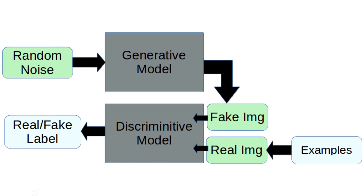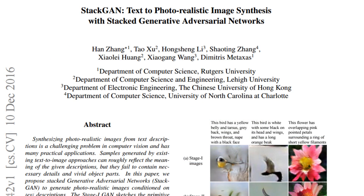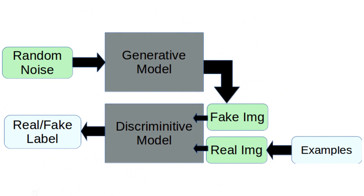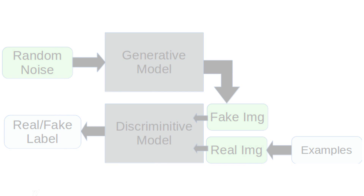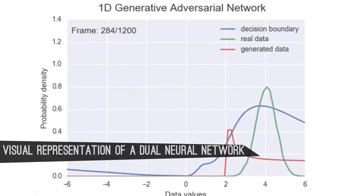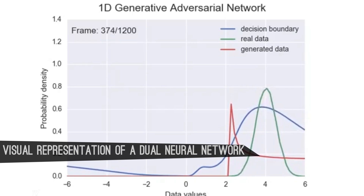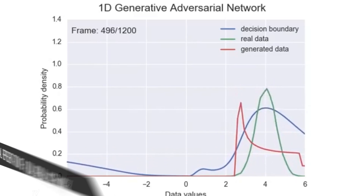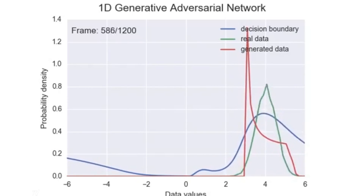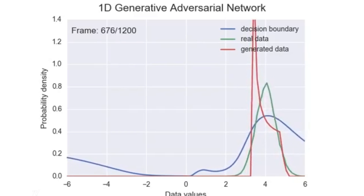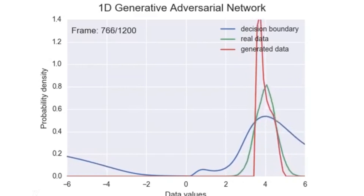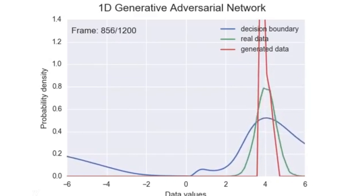What if we combine two neural networks together and made them compete against each other so that they can train and improve themselves without human intervention? That's what our featured AI called StackGAN is doing. It uses one neural network to generate images and another neural network within the same system to decide if the images generated are real or fake. What ends up happening is that the generative neural network improves itself at generating images based on the feedback given by the deciding network. In the same stride, the deciding network gets better at distinguishing what's real and fake. This creates a feedback loop of continuous improvement without human intervention. The end process is the creation of a low resolution synthesized image.